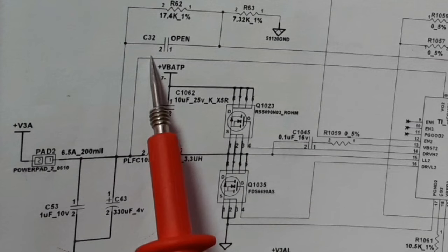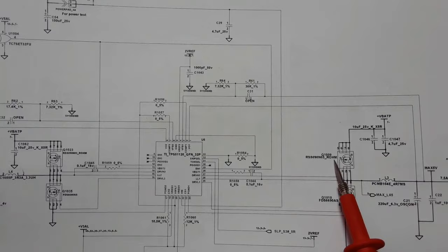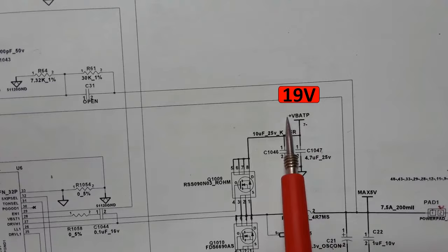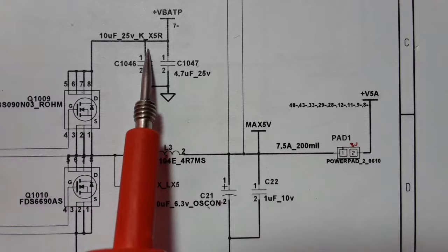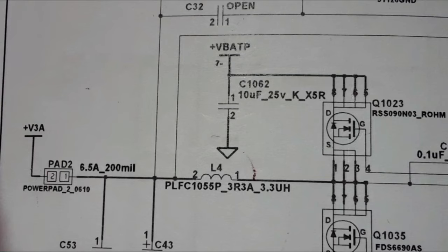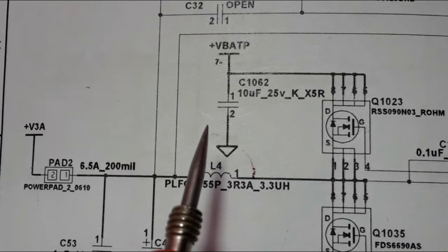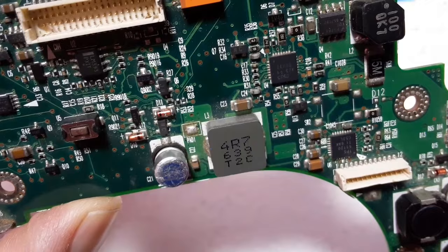Now if we go to the schematic, this is the input voltage — 19 volts — for the 3-volt circuit. And here also for the 5-volt channel, we have the input voltage, 19 volts, labeled as plus V-bat. As you can see, we have two ceramic capacitors: C10-47 and C10-46. We should find 19 volts in these capacitors and also in the drain of MOSFET Q10-09. The same for the 3-volt channel — we should find 19 volts in ceramic capacitor C10-62 and in the drain of MOSFET Q10-23.